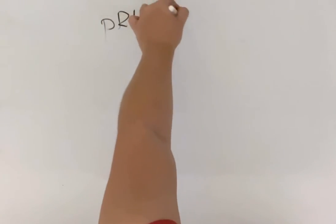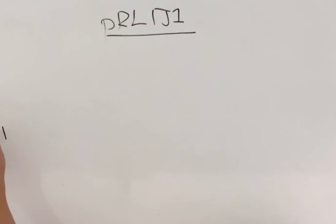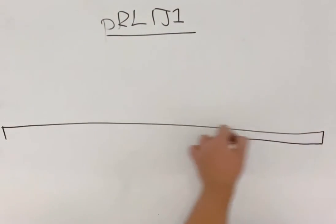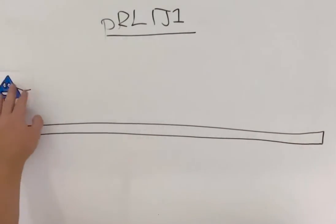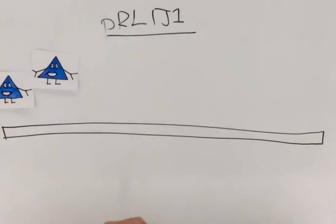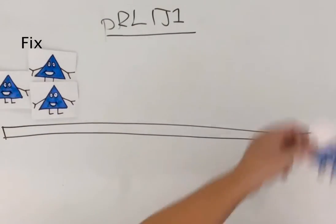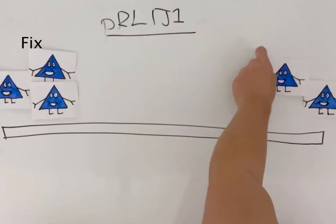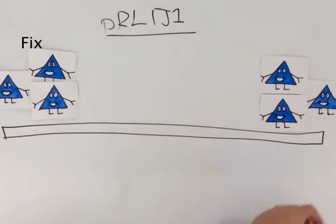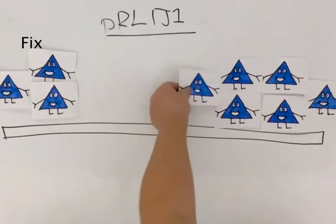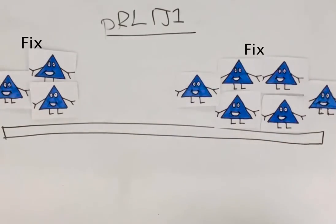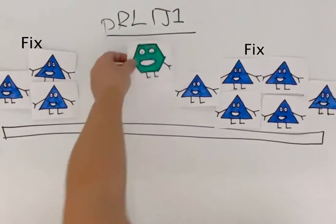Altogether, Downey used this information to create a map of the pRL-IJ1 plasmid, which shows the nod genes between two separate groups of fix genes. Whilst this tells us the structure of the nod and fix genes, it doesn't tell us anything about how they function.